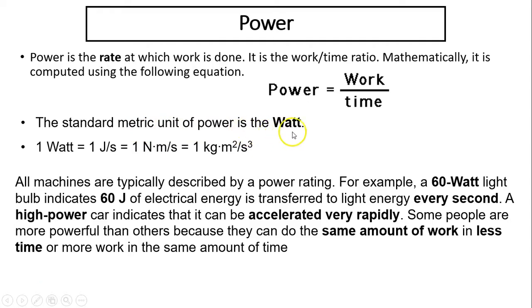The standard metric unit for power is the watt. One watt is one joule per second. A joule is newton times meters per second. Newton, remember, is ma, which is kilograms times meters over seconds squared times meter per second. It gives you kilograms times meters squared over seconds cubed.